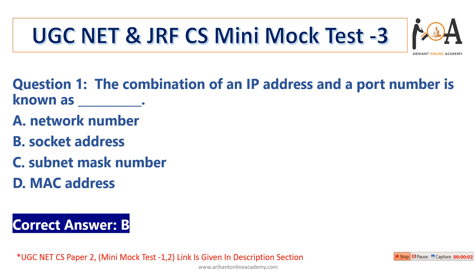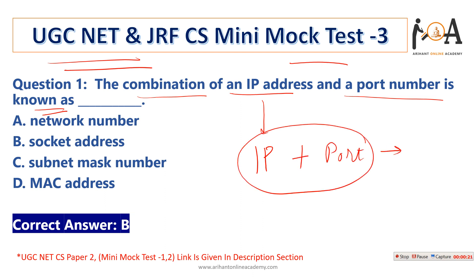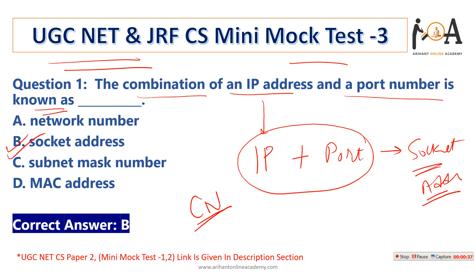Let's face the mini mock test 3 for the upcoming UGC NET and JRF exam. Question number one: the combination of an IP address and a port number is known as — we discussed in computer networks that IP address plus port number, by combining both, it becomes a socket number or socket address. So option B is the correct answer.